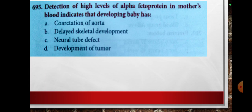Next, detection of high levels of alpha-fetoprotein in the mother's blood indicates that the developing baby has: option A, coarctation of aorta; option B, delayed skeletal development; option C, neural tube defect; option D, development of tumour.